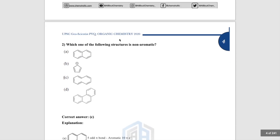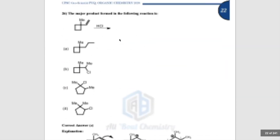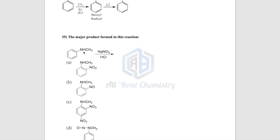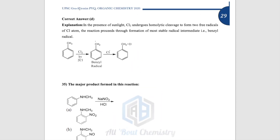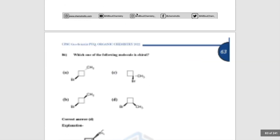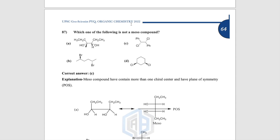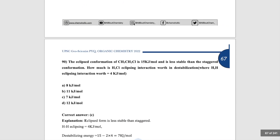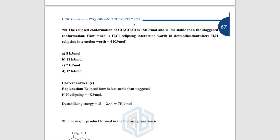One more feature is the header section. We've made it accessible so that on whatever page you are, you can see which year and which exam that question belongs to. The header will tell you, for example, 'UPSC Geoscientist Previous Years Question — Organic Chemistry — 2020 Exam.' As you scroll down it becomes 2022, so you always know which year a question is from.